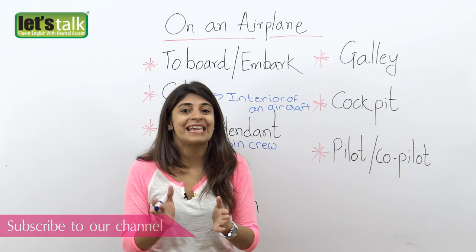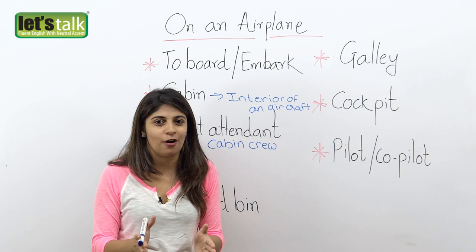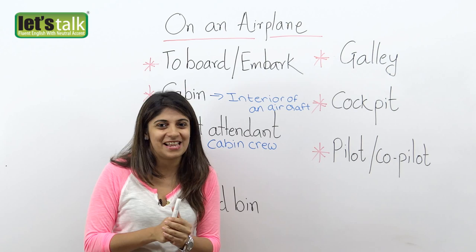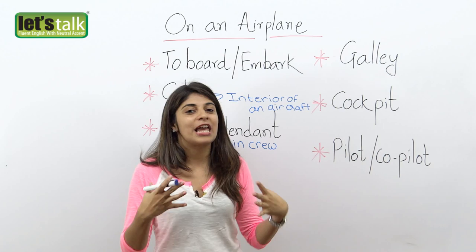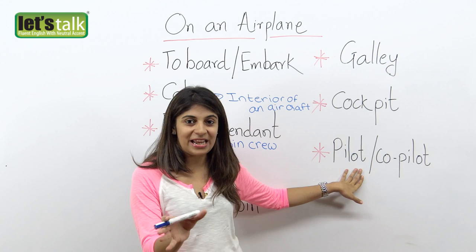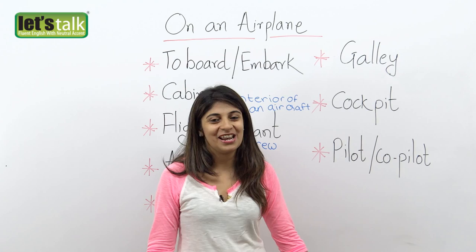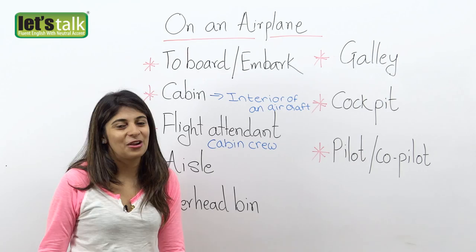We have the pilot and co-pilot, also called captains. They are the ones who control and fly your aircraft. The pilot is the main captain whereas the co-pilot is the assistant to the pilot. So these are the things that you would see in an aircraft, and now let's have a look at some more vocabulary.